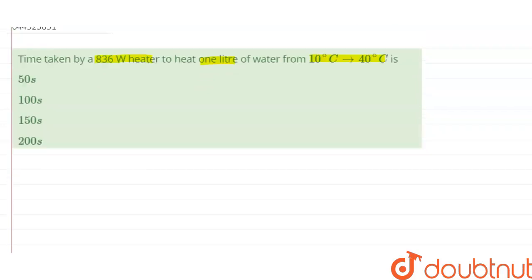Now the power of heater is given as P equals to 836 watt. Now the heat taken from this heater can be written as H taken, so heat taken from heater can be written as power into time, and power is given so it is 836 into time. This is the heat taken from the heater.